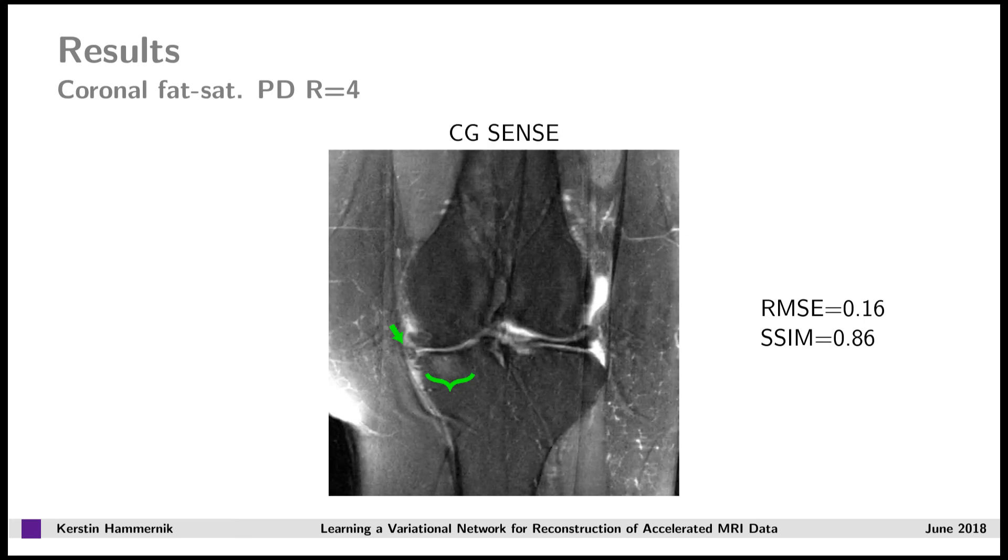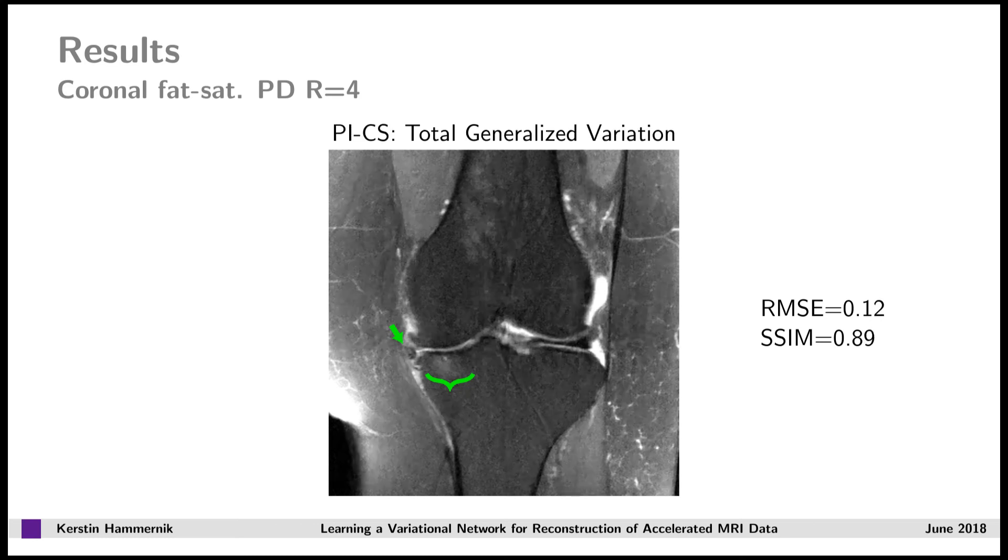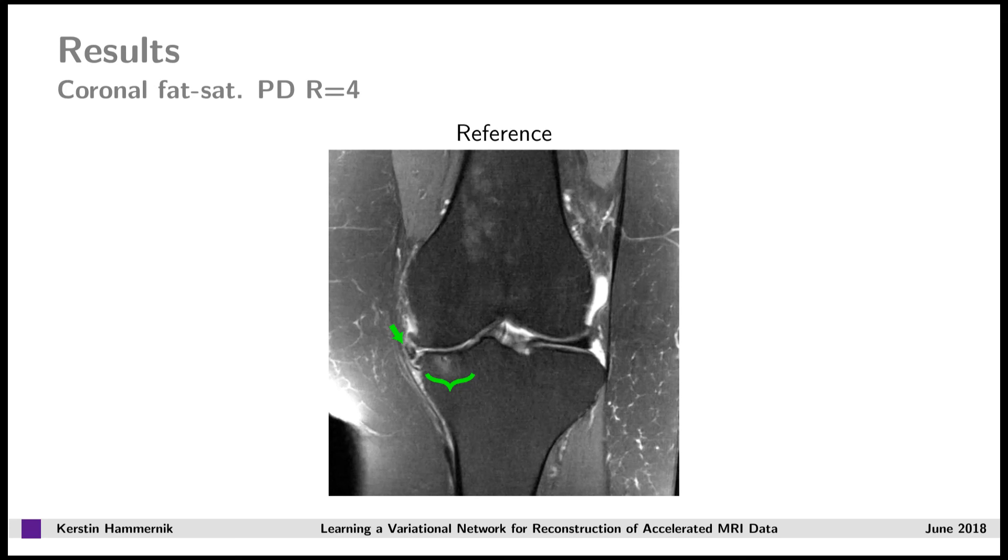The SENSE result, which is optimal in terms of RMSE, shows a lot more of residual artifacts. If we look at the total generalized variation reconstruction, the image looks blocky and unnatural at this level of SNR. Also, the dictionary learning result shows remaining artifacts here. Again, our variational network reconstruction shows improved image quality in terms of sharpness and suppression of undersampling artifacts, and in terms of quantitative area values. Here we have, again, a comparison to the fully sampled reference.